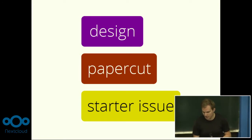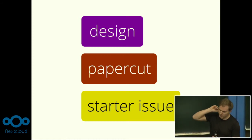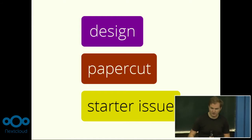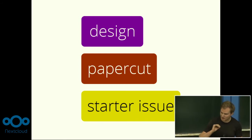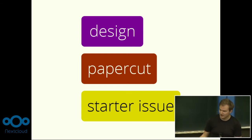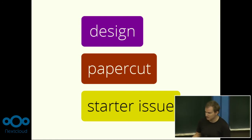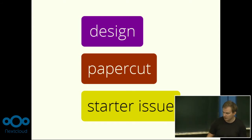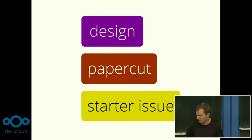The second label, introduced a year ago and inspired by Ubuntu Paper Cuts and Gnome 100 Paper Cuts, is the paper cut label. A paper cut issue is a very small issue which is easy to fix and has a big impact on the user experience — great for polishing the details. The last one, but very important, is starter issues. That's for any issue in general if you want to get started — easy issues for people new to the project. Combining design and starter issues is a perfect way to get involved.